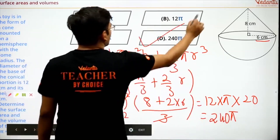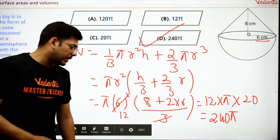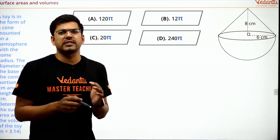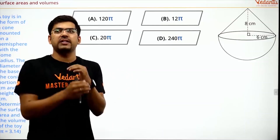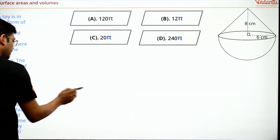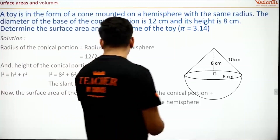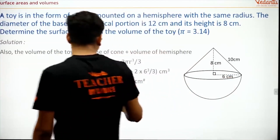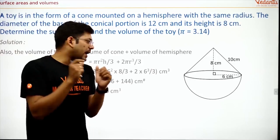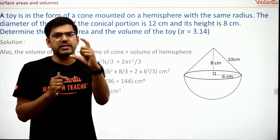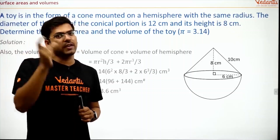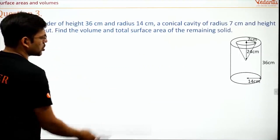That gives us 240π. Whoever got option D got it correct. These questions are easy, and I've analyzed the past five to seven years of questions — these are the most probable ones. Today's agenda is to solve all questions in only two to three lines so that you can save time in your exam. Such long solutions are not required.